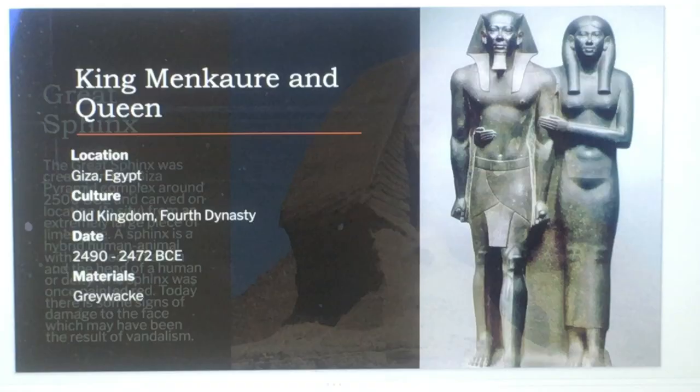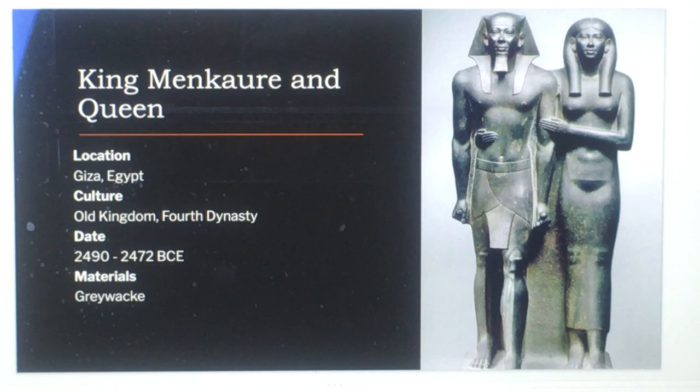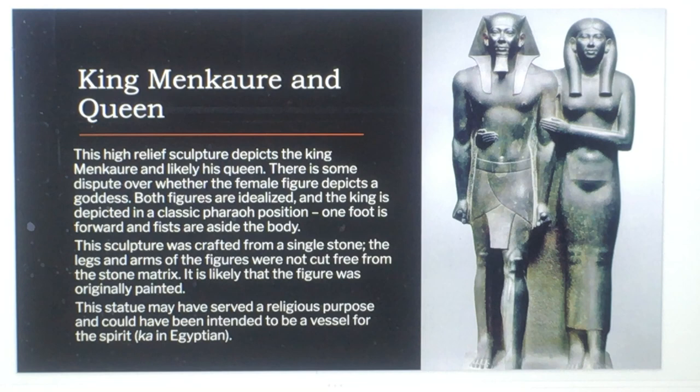This is King Menkaure and the Queen, located in ancient Egypt. The culture is Old Kingdom, Fourth Dynasty, 2490 to 2472 BCE, and the materials are gray wacke. This is a high relief sculpture and it depicts the king and likely his queen, though there is some dispute over whether the female figure depicts a goddess.